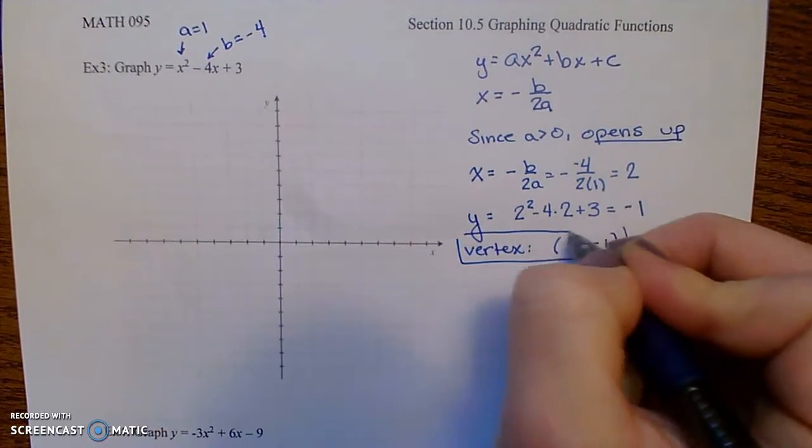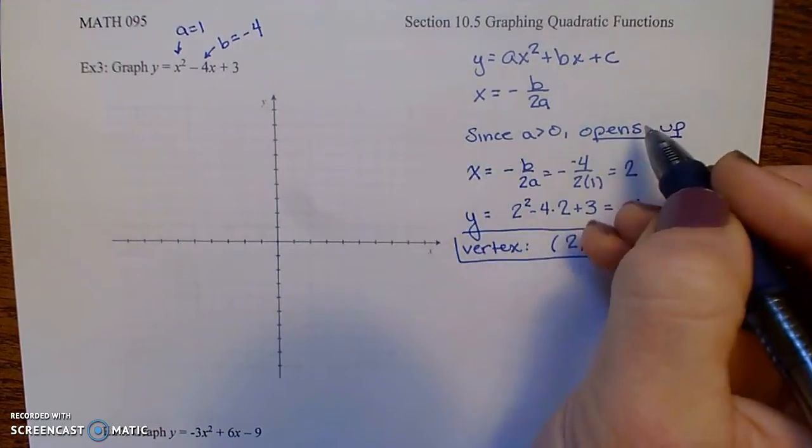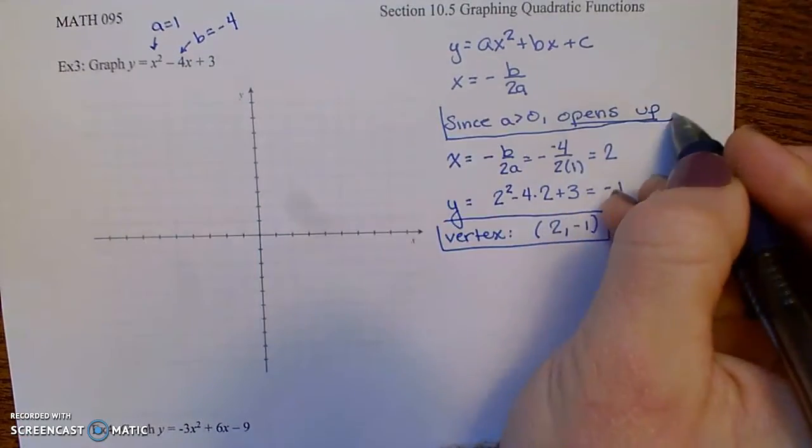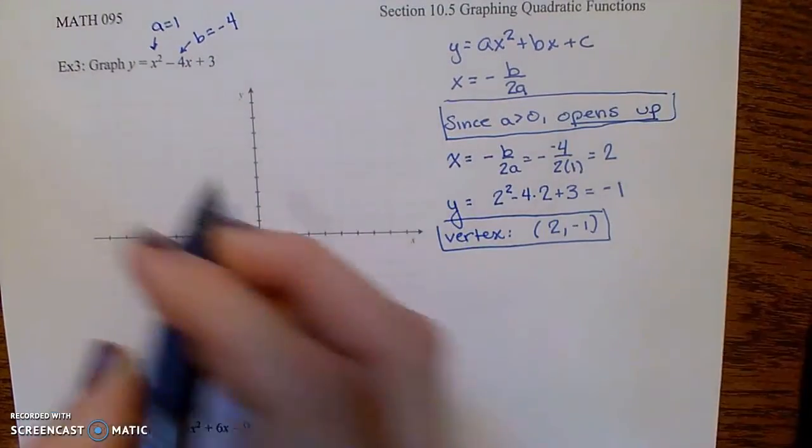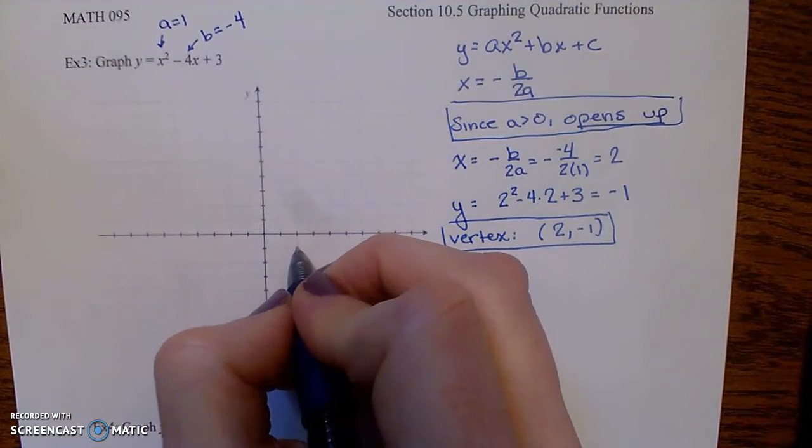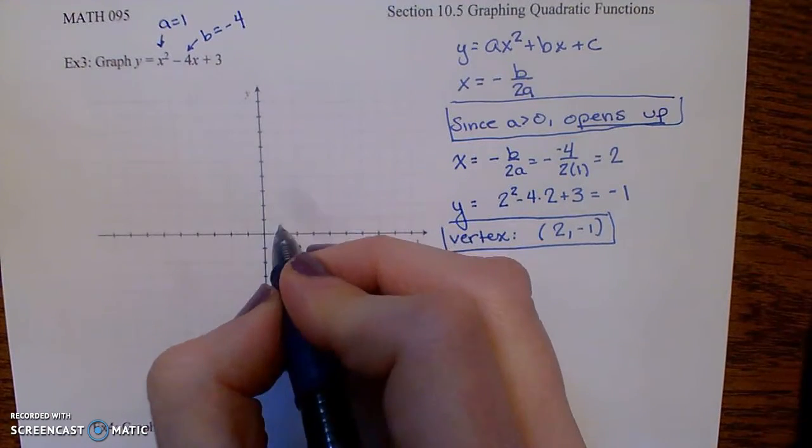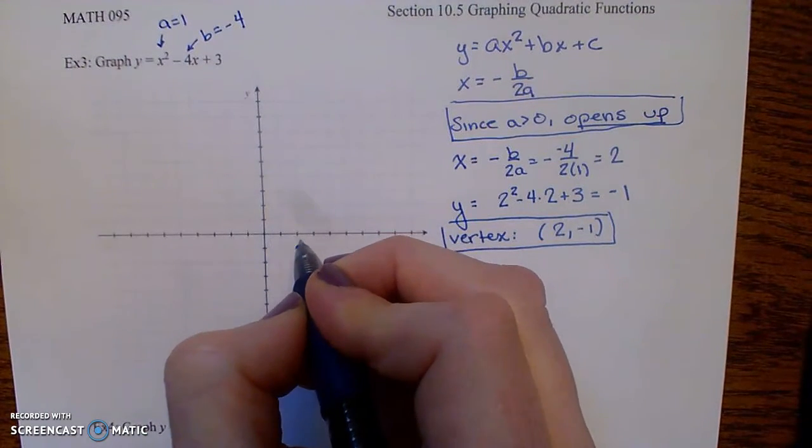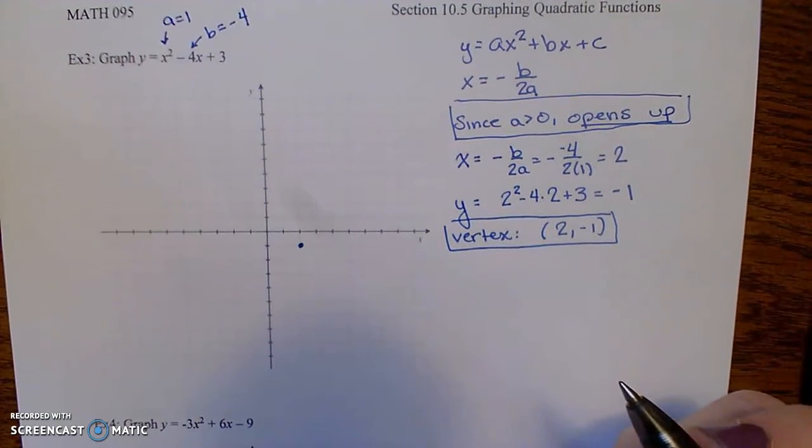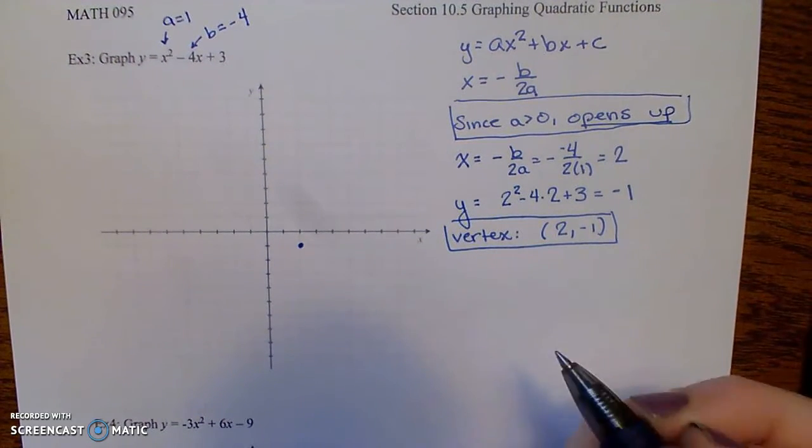So this is one piece of information I know. Start plotting this. So 2 comma negative 1. Since it opens up, I do see that it will cross the x-axis. So I am expecting to see 2 x-intercepts.